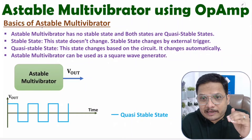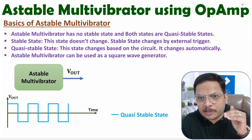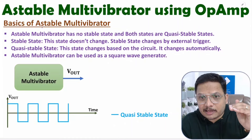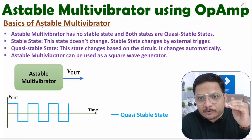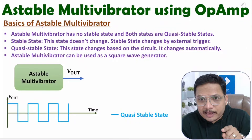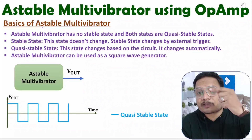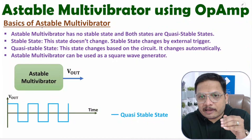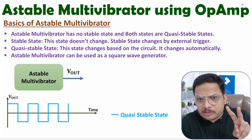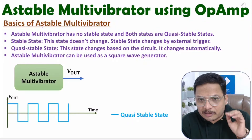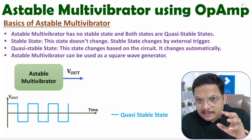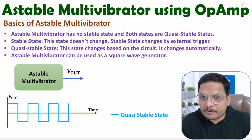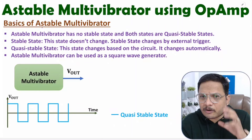The quasi-stable state changes automatically. So here, V-plus and V-minus both states change automatically. Output at V-plus will change to V-minus automatically, and V-minus changes to V-plus automatically. That's why the astable multivibrator has both states in quasi-stable form, and it is used as a square wave generator.